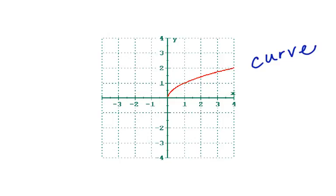The second thing you'll notice is that it is positive. That's because you can't take the square root of a negative number — you can only take the square root of a positive number. It begins at a spot and it continues. That beginning spot is called the origin.